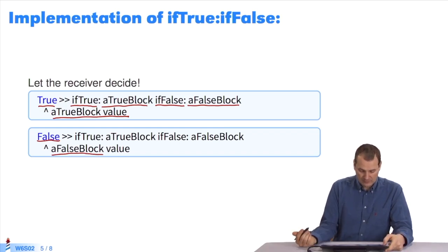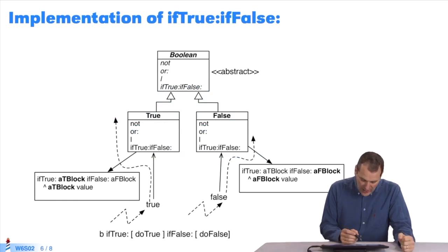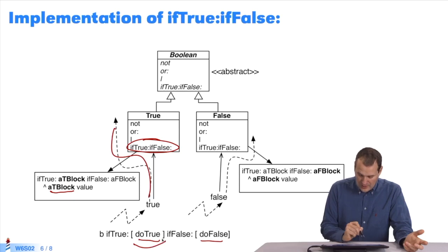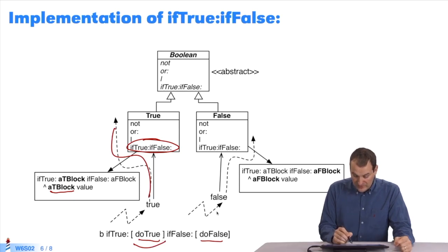How does it work? If true block, like this. When I send a message to my boolean, which is in fact true, I send if-true, do something true, or do something false. Then I look up if-true, if-false in the true class. It's right here. It says to execute the true block, so I do. Now I send the message, B is a boolean, false. I send the message and look here. I find if-true, if-false. It says to execute the false block, and that's what I do.